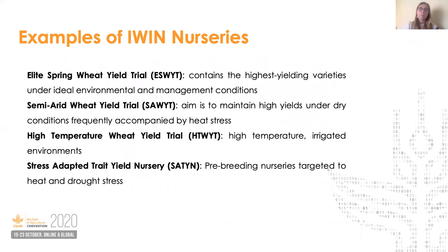The IWIN distributes a number of different types of nurseries. Perhaps one of the most well-known is the Elite Spring Wheat Yield Trial, or ESWYT, which contains high-yield potential spring wheat germplasm adapted to Mega Environment 1. This is one of the longest-running IWIN nurseries, first established in 1981. In addition to ESWYT, there are nurseries targeted at other mega environments, specific types of stress profiles, diseases, and different types of breeding material.